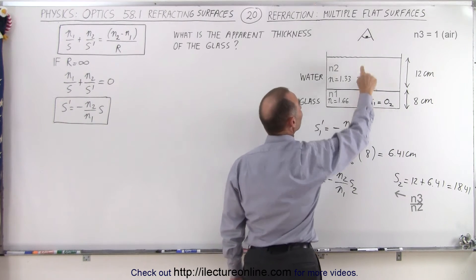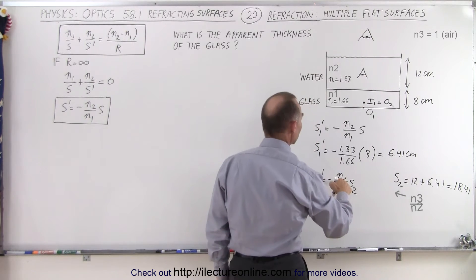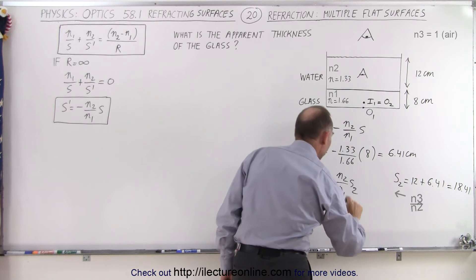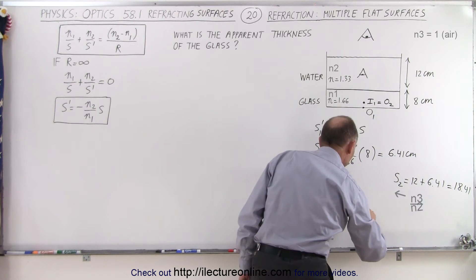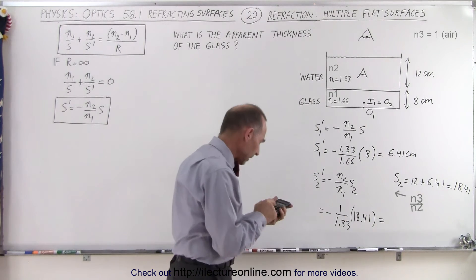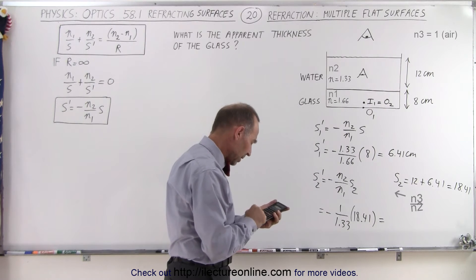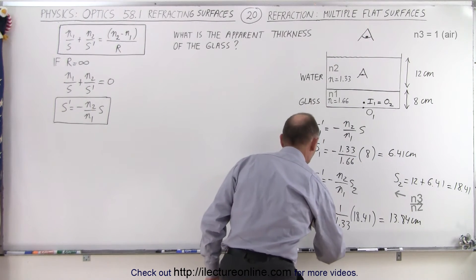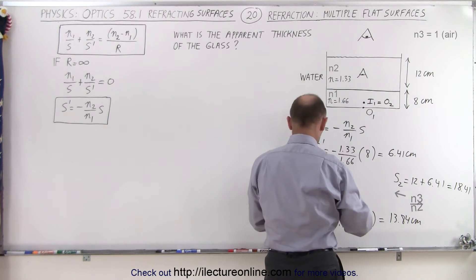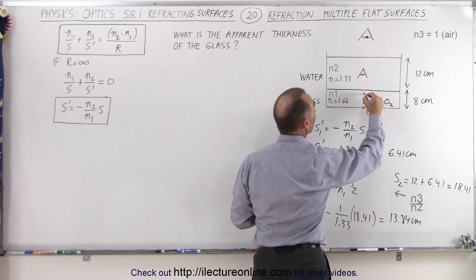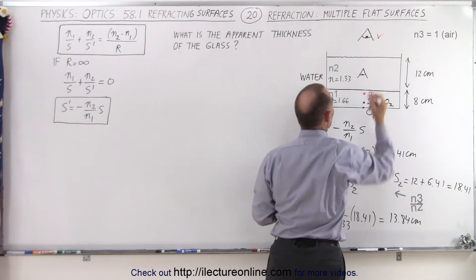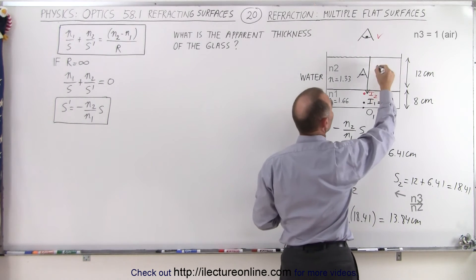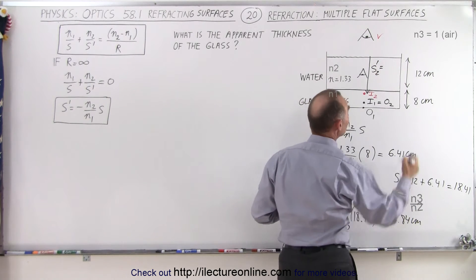Step two: S2' = -(N2/N1) × S2. Here N2 is 1 (air) and N1 is 1.33 (water), and S2 is 18.41 centimeters. So S2' = -(1/1.33) × 18.41. We take 18.41 divided by 1.33, which gives us 13.84 centimeters. So S2 prime equals 13.84 centimeters — this is image 2, the apparent position of the bottom of the glass as seen from above.